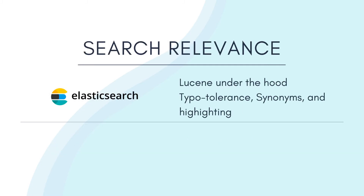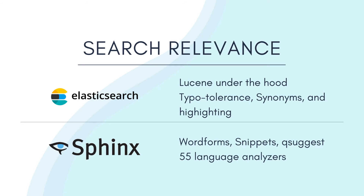Next we will look at configuring search relevance. Elasticsearch uses Lucene under the hood to deliver results in real-time. It supports typo-tolerance, synonyms, highlighting and suggestions. You will have access to over 34 language analyzers to help you create a multi-language search. Sphinx also supports similar features but calls them word forms in case of synonyms and snippets for highlighting. QSuggest is used for spell checks. Sphinx also has access to 55 language analyzers. Both technologies also use the Okapi BM25 ranking algorithm to calculate search relevance scores, although Sphinx uses a variation to fit their technology.